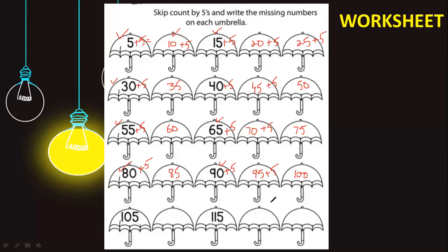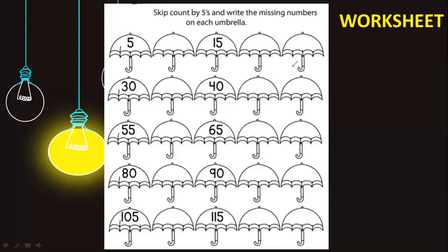Ninety plus five gives ninety-five. Now for the last line: 100 plus 5 gives 105 — already written. 105 plus 5 gives 110. 110 plus 5 gives 115 — already written. 115 plus 5 gives 120. 120 plus 5 gives 125. I hope this worksheet is clear to all of you — it is quite easy and you can do it by yourself.